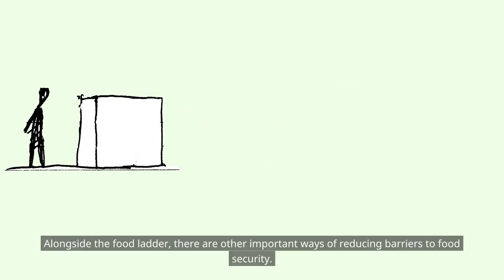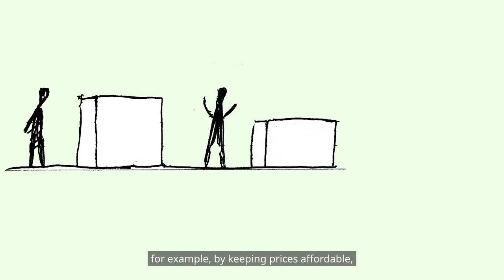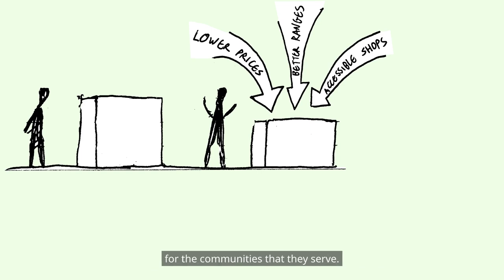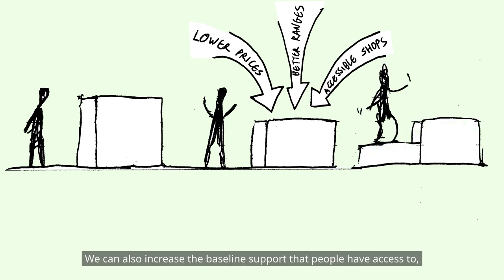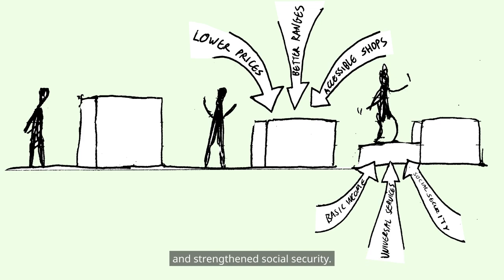Alongside the food ladder, there are other important ways of reducing barriers to food security. We can make food security more attainable, for example by keeping prices affordable and ensuring that shops are accessible and stock sufficient and appropriate produce for the communities they serve. We can also increase the baseline support that people have access to, for example through universal basic income, universal basic services, and strengthened social security.